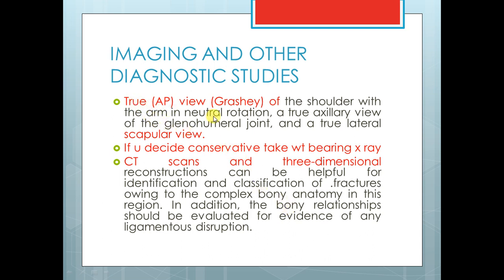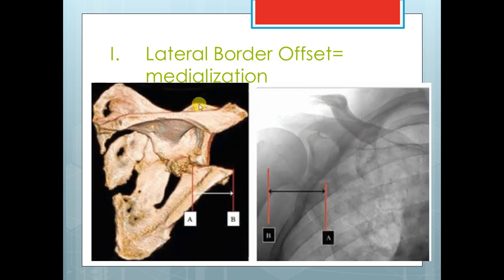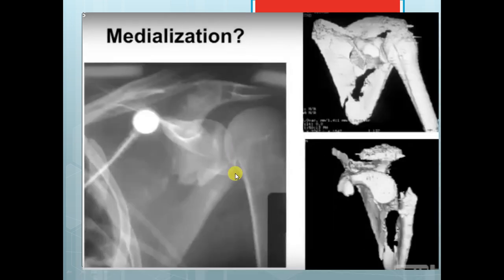Regarding imaging, you need a true AP perpendicular to the scapular inclination — called the Grashey view — and a true scapular Y view. You also need CT; 3D CT is considered the gold standard. It is used to detect lateral border offset or medialization: draw a vertical line from the lateral extent of the proximal fragment to the lateral extent of the distal fragment — if more than 2 cm, you need to fix. Beware of the difference between lateral border offset and medialization.